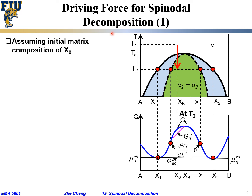Let's take a look at the driving force for spinodal decomposition. We are showing two related plots. The top one is part of a phase diagram: the vertical axis is temperature, the horizontal axis is composition — left side pure A, right side pure B. Above this solid black curve we have a uniform single-phase solid solution called alpha; below this curve we have a two-phase mixture called alpha 1 plus alpha 2. Within this two-phase region there is a green shaded region outlined by a dashed curve.